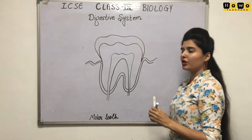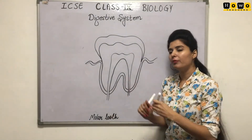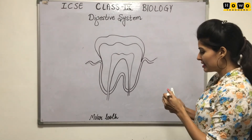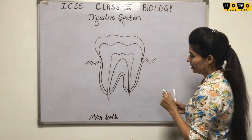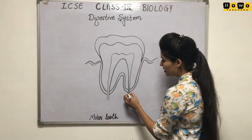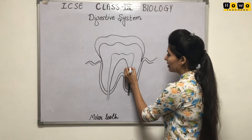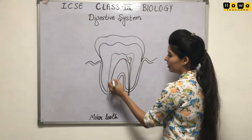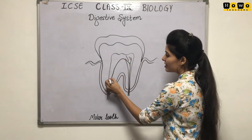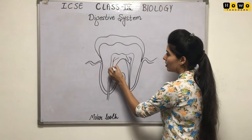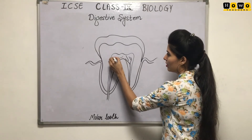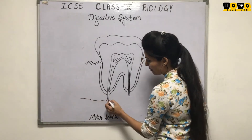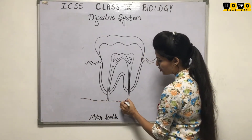The diagram of tooth is quite easy if you follow these steps. So let us start the drawing of the nerves inside it. These are the nerves that are present. Along with that, we have to draw the lower jaw.